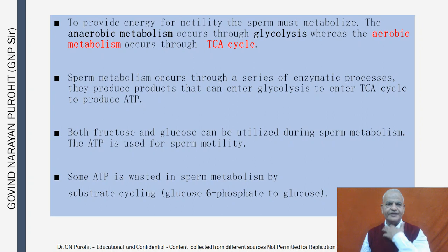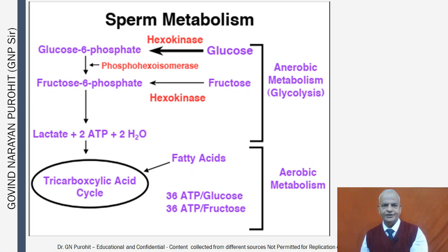To provide energy for motility, the sperm must metabolize substrates. Anaerobic metabolism occurs through glycolysis, while aerobic metabolism occurs through the TCA cycle. Sperm metabolism occurs through enzymatic processes producing products that can enter glycolysis or the TCA cycle to produce ATP. Both fructose and glucose can be utilized. Aerobic metabolism produces 36 ATP from glucose and 36 ATP from fructose.